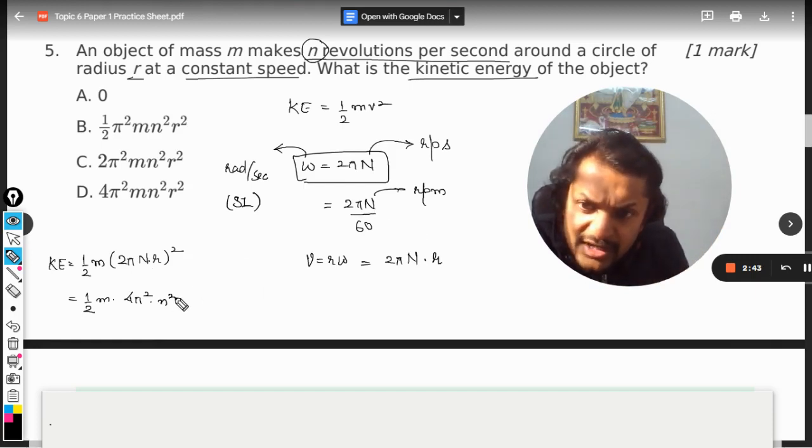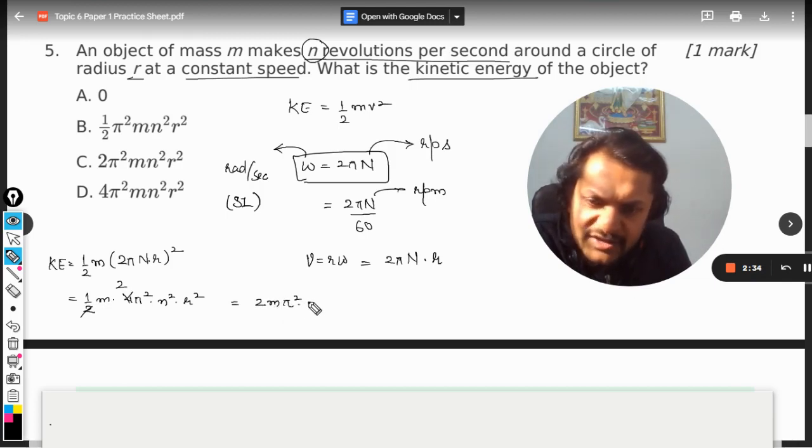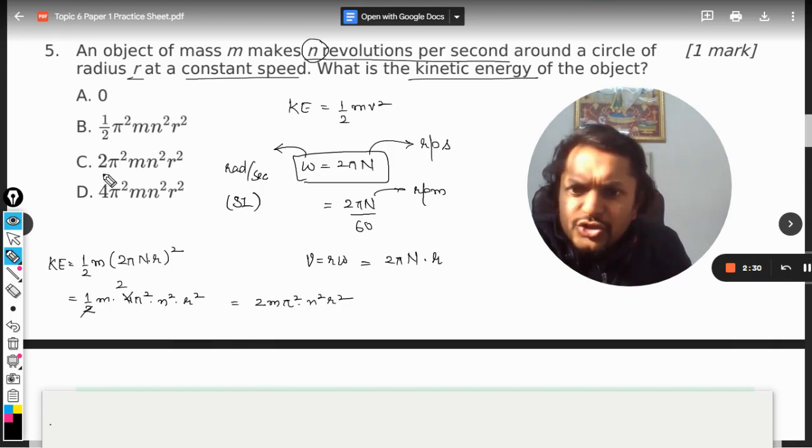So this 2 is cancelled by the 4, so what we have is 2 m pi square n square r square. So it's 2 pi square m n square r square.